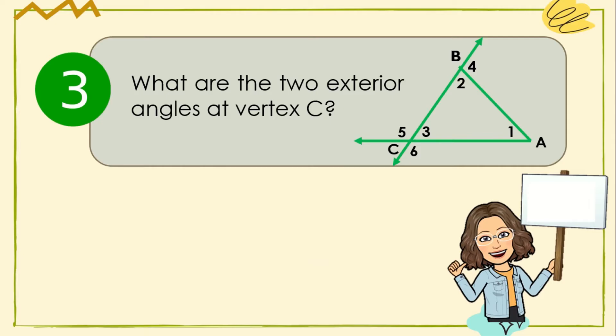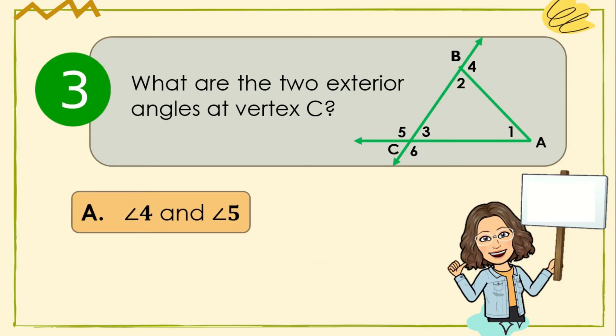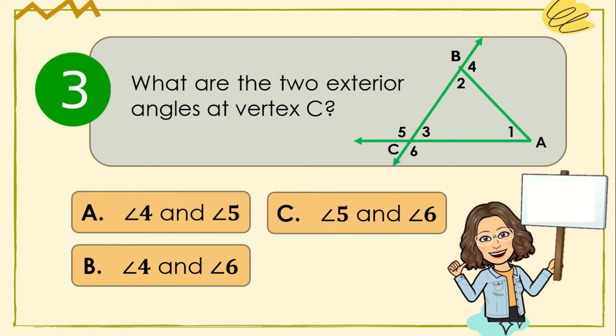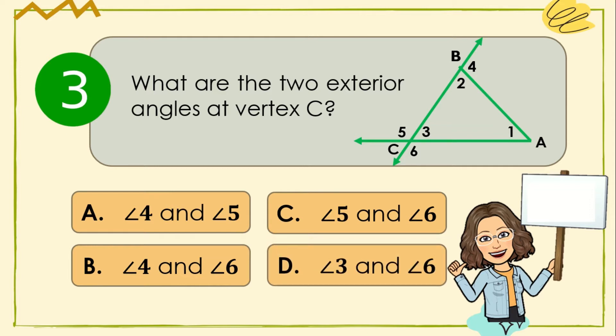Given the figure on the right, what are the two exterior angles at vertex C? Is it Letter A: Angle 4 and Angle 5; Letter B: Angle 4 and Angle 6; Letter C: Angle 5 and Angle 6; or Letter D: Angle 3 and Angle 6?